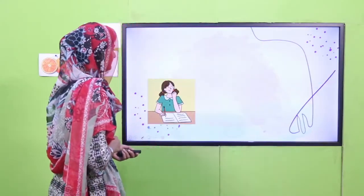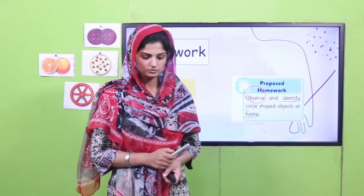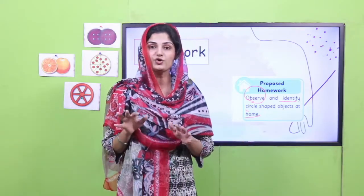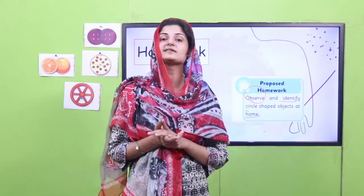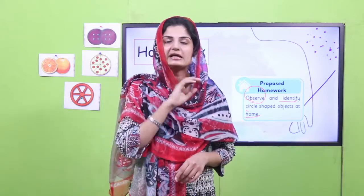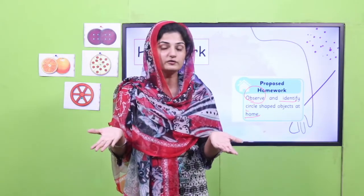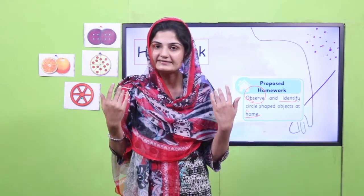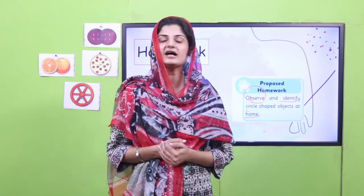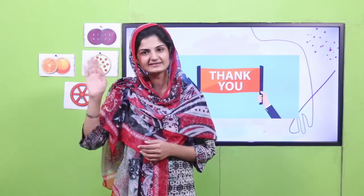Your homework is to observe and identify circle shape objects at your home. Go home and look for things which are circle shapes. To know if a shape is a circle, trace the outline of any object — if it comes back to where it started without any stop, then you know it is a circle shape. With that, our lesson has come to an end. I hope you have enjoyed all the activities and you're going to perform them again. See you in the next lesson. Allah hafiz!